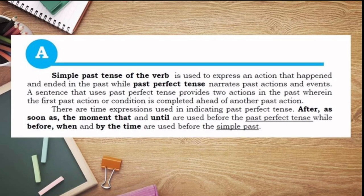To sum it up: simple past tense is used to express an action that happened and ended in the past, while past perfect tense narrates past actions and events where the first past action is completed ahead of another past action. Time expressions 'after,' 'as soon as,' 'the moment that,' and 'until' are used before the past perfect tense, while 'before,' 'when,' and 'by the time' are used before the simple past.